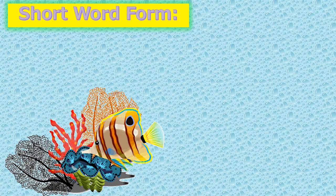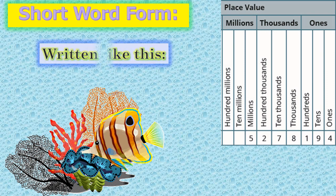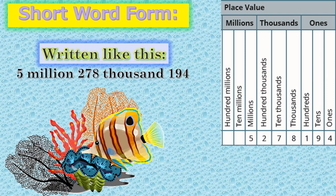Short word form. We write the digits in numbers and the period name in words. Let's take a look at the number at the bottom of the chart. To write this number in short word form, it is written like this: 5 million, 278 thousand, 194. Notice the digits in the units period — you write the digits only.